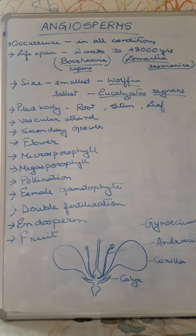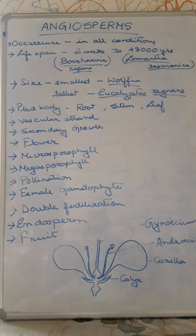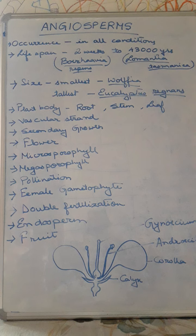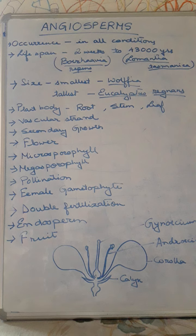Double fertilization means angiosperms possess the specialty of being fertilized twice. Two male gametes are formed — one male gamete fuses with the egg to form the zygote, and the other male gamete fuses with the definitive nucleus to form the endosperm. The endosperm is a nutritive tissue which provides nourishment to the developing embryo. This endosperm is triploid — in gymnosperms the endosperm is haploid, but in angiosperms it is triploid.